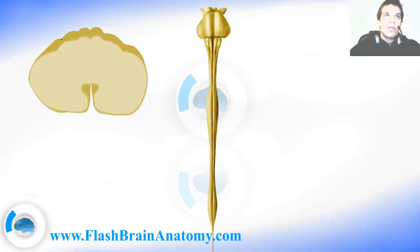The posterolateral sulcus, this sulcus over here, is very important because I said that the posterior roots for the spinal nerves leave here. So they come from here and they join the anterior roots and they create the spinal nerve.